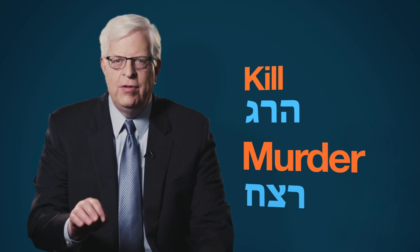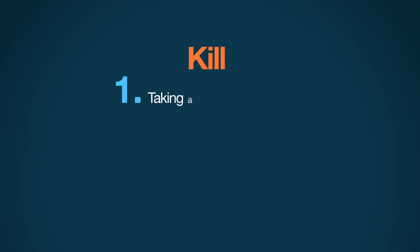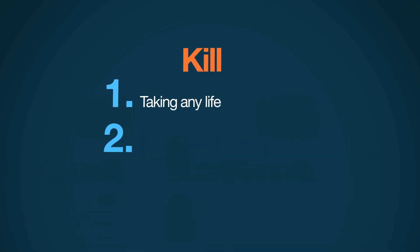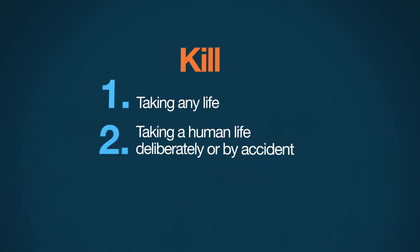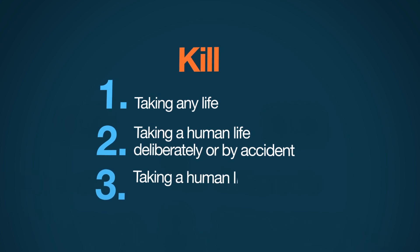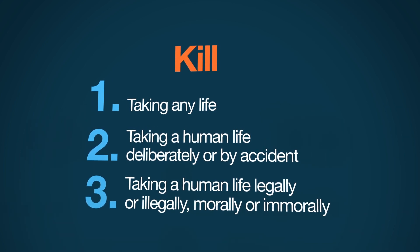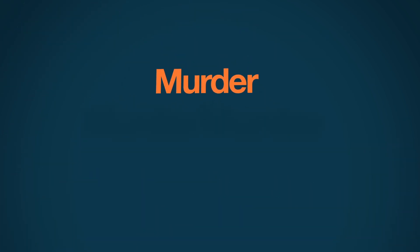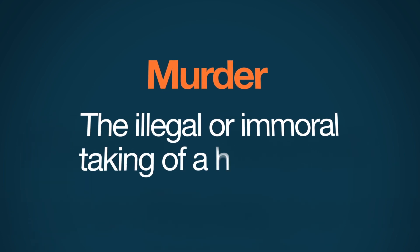The difference between the two is enormous. Kill means: one, taking any life, whether of a human being or an animal; two, taking a human life, deliberately or by accident; three, taking a human life, legally or illegally, morally or immorally. On the other hand, murder can only mean one thing: the illegal or immoral taking of a human life.